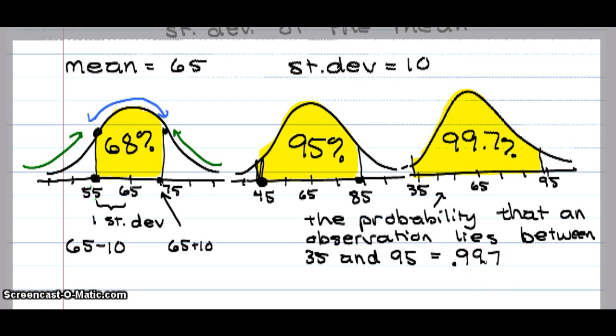That takes a long time to write. So we use notation in statistics. P parenthesis. That means the probability that x lies between 35 is less than x is less than 95 equals 0.997. And if you said 99.7%, that would be every bit as good.